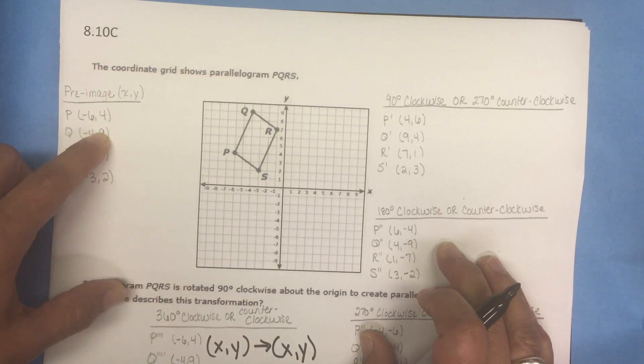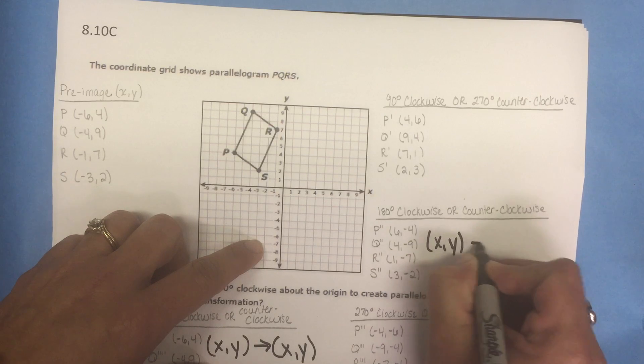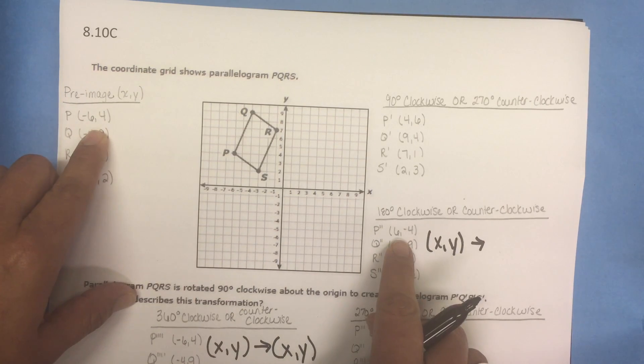Now let's look at a 180 degree rotation. So what happens to the coordinates when we rotate 180 degrees? Let's look here.